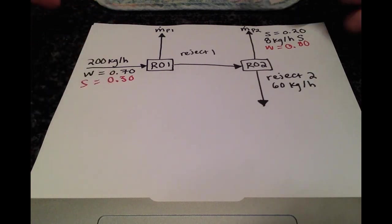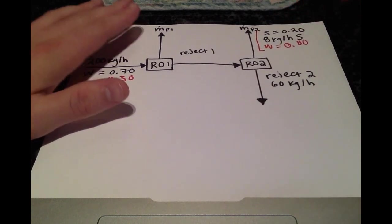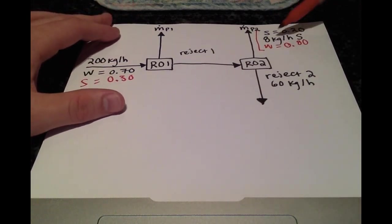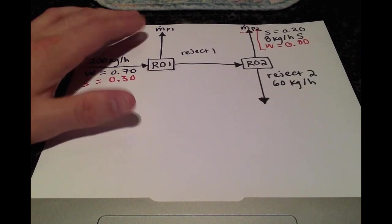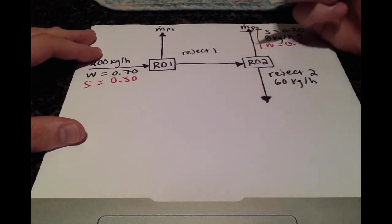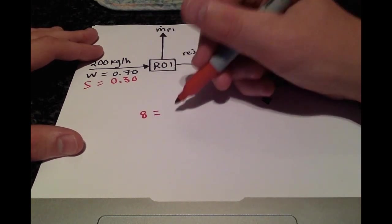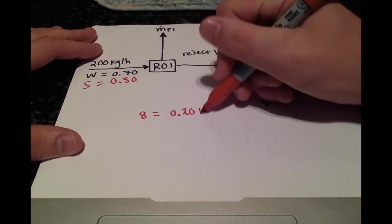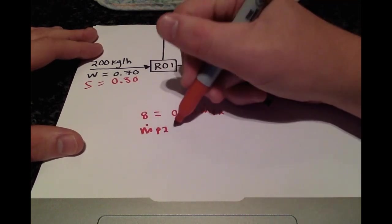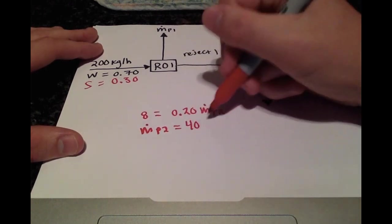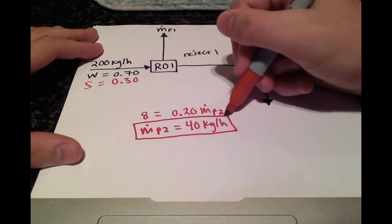If you look at each of the individual streams, we have the salt percent by mass and the flow rate of salt. We can use that relationship to find the mass flow rate of permeate 2. The mass flow rate of salt is 8 kilograms per hour, and that's equal to 0.20 times MP2. Dividing that over, we get MP2 is equal to 40 kilograms per hour, and we've solved for our first mass flow rate.